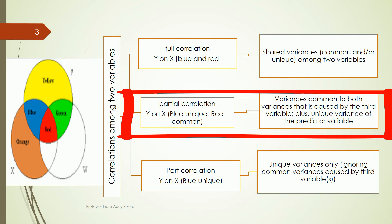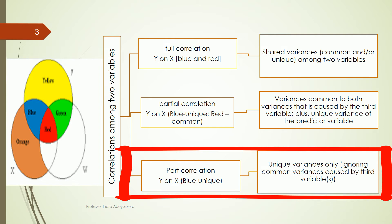In that setup, the blue area is the unique variance offered by the x variable, and the red area is the common variance offered by x and the third variable w. So partial correlation, using a third variable, allows us to identify the unique variance offered by a predictor variable and the common variance offered alongside it.